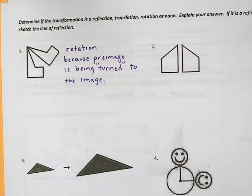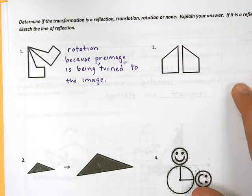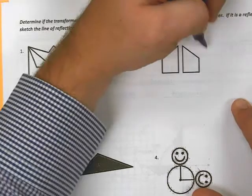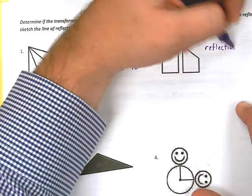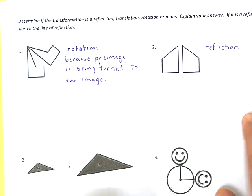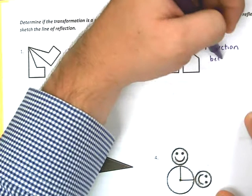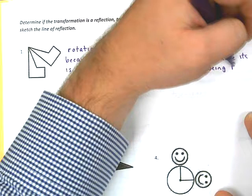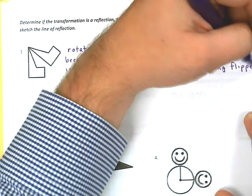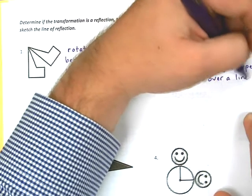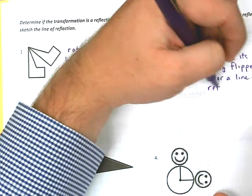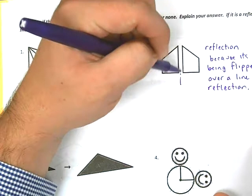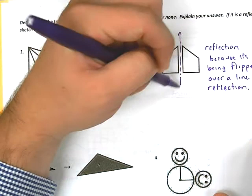Now, when we look at number two, this is definitely not a rotation. What's going on here? This one looks to be a reflection. And I know this is a reflection because it's being flipped over a line of reflection. And then I need to draw that line. Maybe dash it.